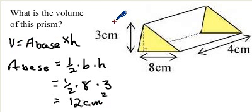Now to find, go back to our volume. We're trying to find the volume for this triangular prism. The area of the base times the height. So we have 12 times the height, which is 4.